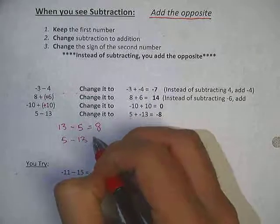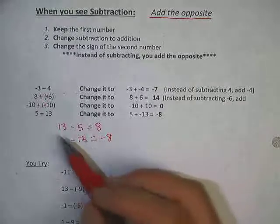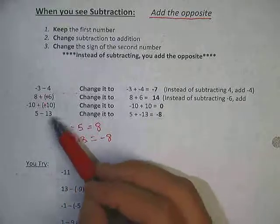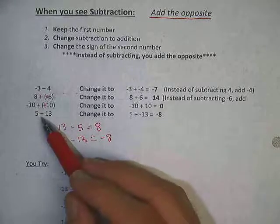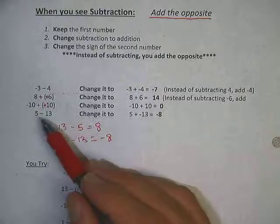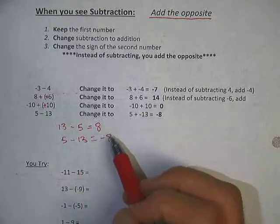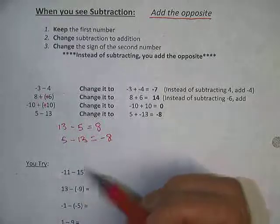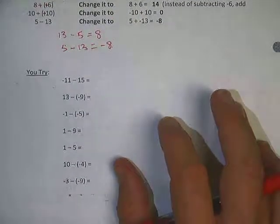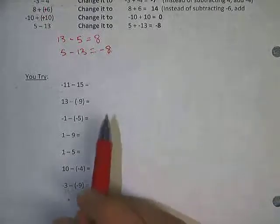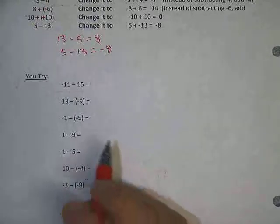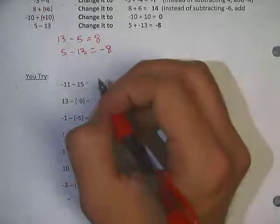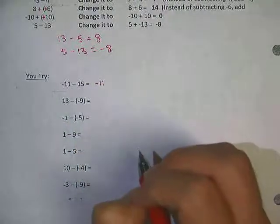For 5 minus 13: change to a plus, change the 13 to a negative, and now it's 5 plus negative 13 — just like the card game. Adding a positive and a negative, they cancel each other out — we get negative 8. For this type of problem, you can also just note that 13 minus 5 is 8, and since a small number minus a large number puts you in the negatives, the answer is negative 8.